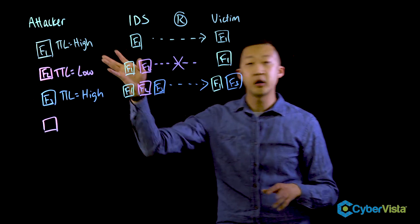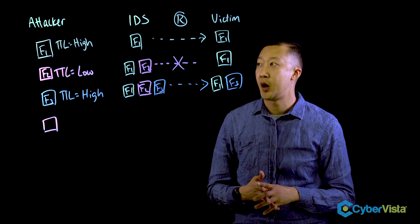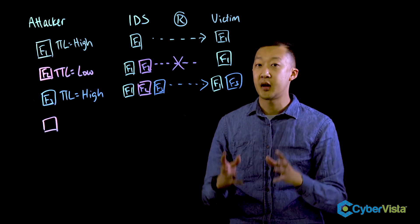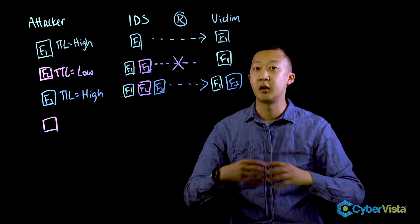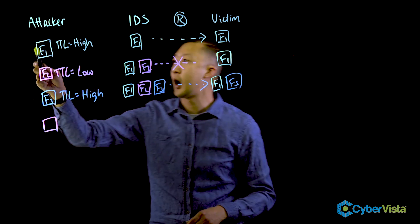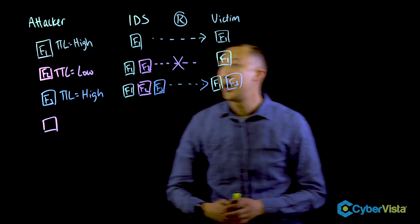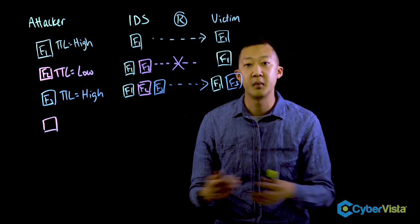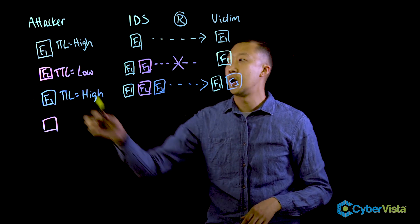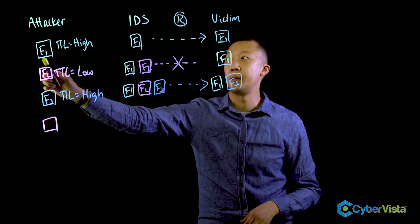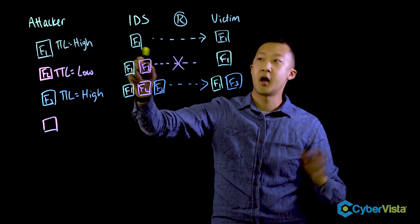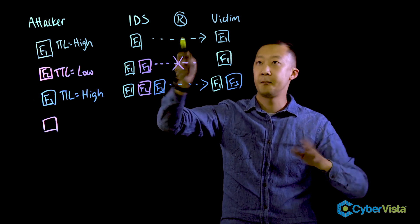When an attacker is trying to send malicious attacks, data will be sent throughout the network in packets. What an attacker can do is break up these packets into different fragments. Over here the attacker has fragment one, two, and three. Given a higher TTL value, it means the packet or fragment can go further distances. So an attacker will send out the first fragment with a high TTL value. The IDS will see it, it'll get to the router, then to the victim.